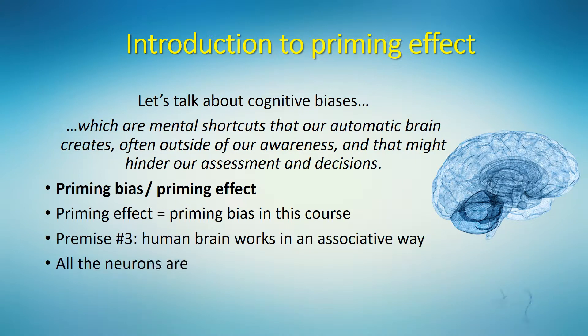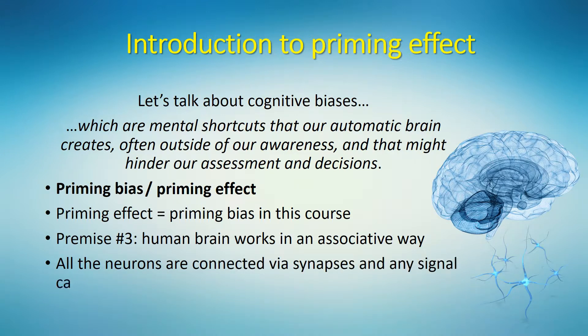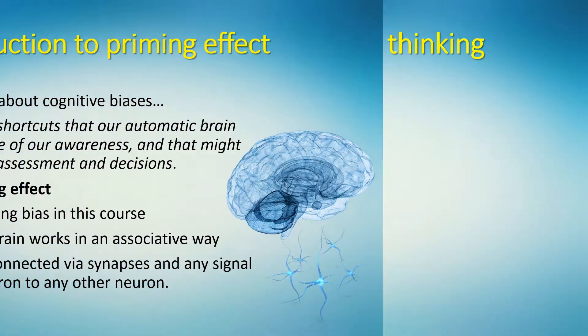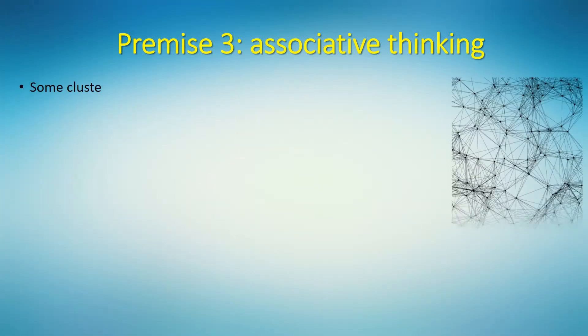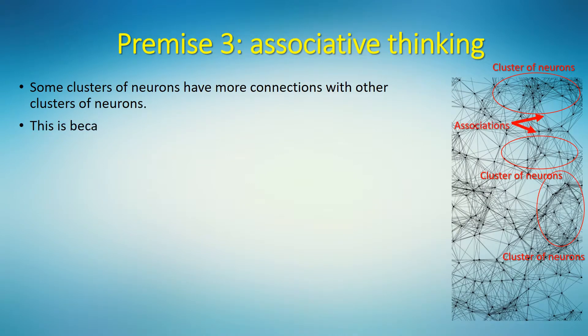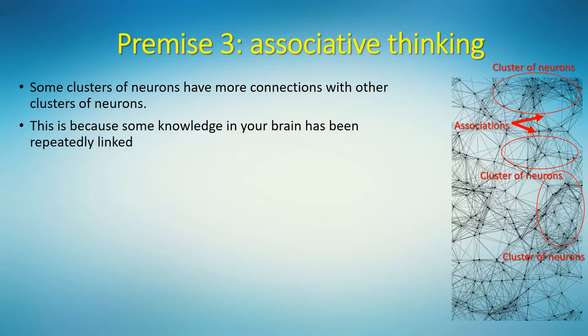All the neurons are connected via synapses, and any signal can get from any neuron to any other neuron — just like you can get from any town in your country to any other town or city. No town can be cut off from the road network in most countries. But some clusters of neurons have more connections with other clusters of neurons, because some knowledge in your brain has been repeatedly linked with specific outcomes or other knowledge.